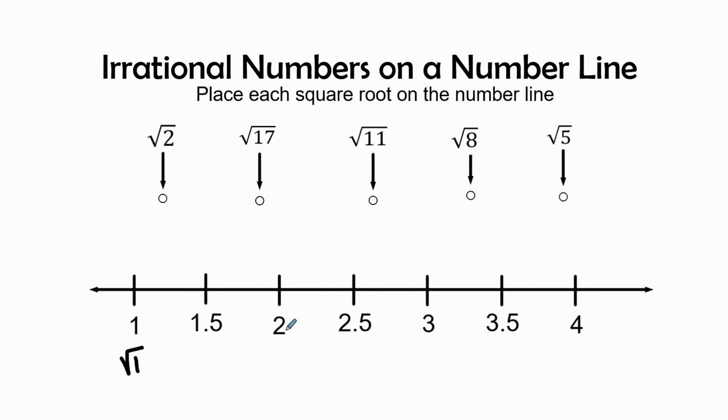So what equals 2? 2 times 2 is 4, so radical 4 equals 2. 3 times 3 is 9, so radical 9 equals 3. And 4 times 4 is 16, so radical 16 is equal to 4.